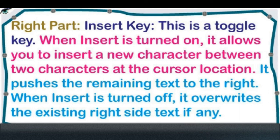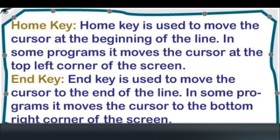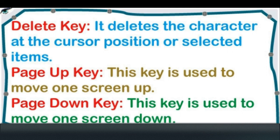Right Part: Insert key is a toggle key. When Insert is turned on, it allows you to insert a new character between two characters at the cursor location, pushing the remaining text to the right. When Insert is turned off, it overwrites the existing text to the right. Home key is used to move the cursor to the beginning of the line; in some programs it moves the cursor to the top left corner of the screen. End key is used to move the cursor to the end of the line; in some programs it moves the cursor to the bottom right corner of the screen. Delete key deletes the character at the cursor position or selected items.